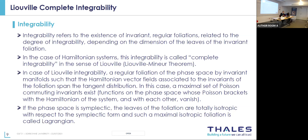If the phase space is symplectic, the leaves of the foliation are totally isotropic with respect to the symplectic form. Such a maximal isotropic foliation is called Lagrangian.